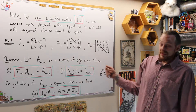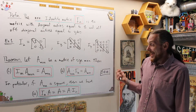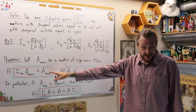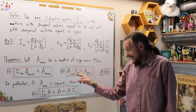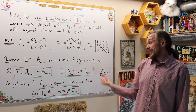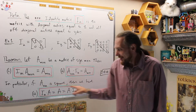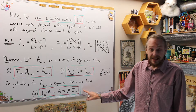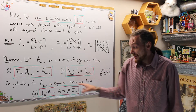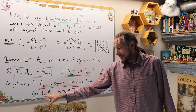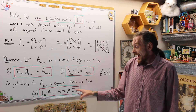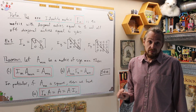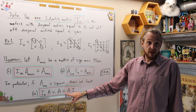Theorem. Let A be a matrix of size n by n. Then we have I_m times A is A — it leaves A alone. And if we multiply on the other side, A times I_n is going to be A. In particular, if A is a square matrix, we have the identity matrix on the left when we multiply, and when we multiply on the right, it just leaves A alone. And this is the one we really want for square matrices.